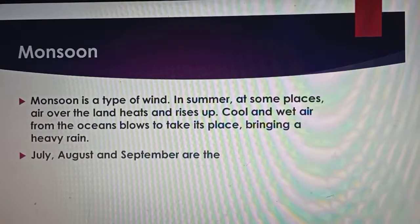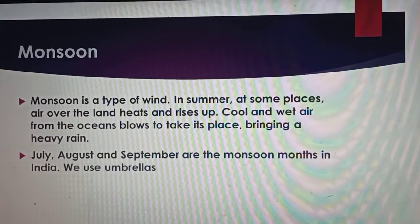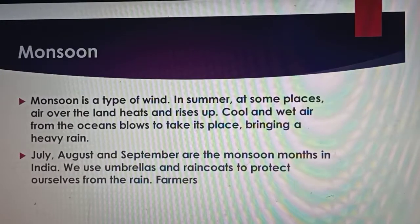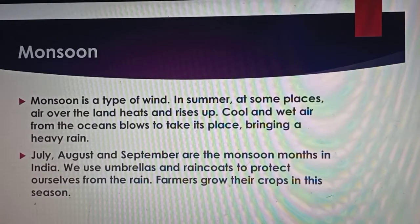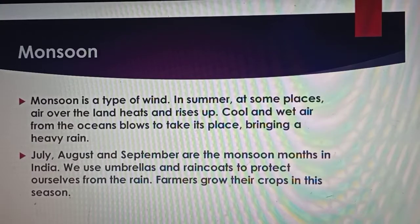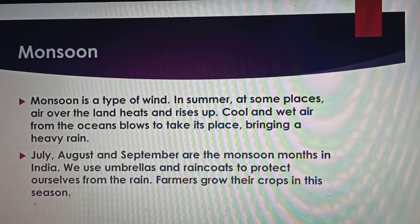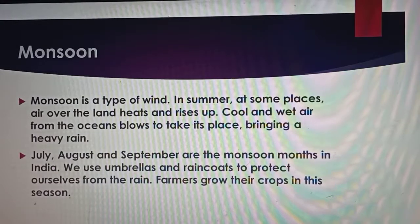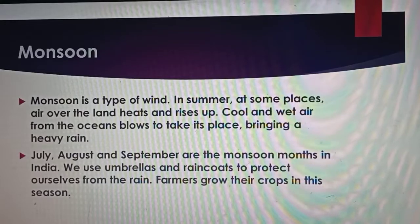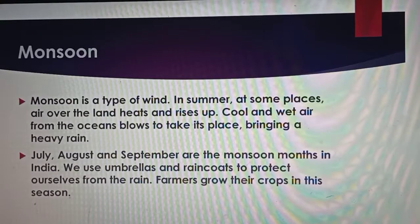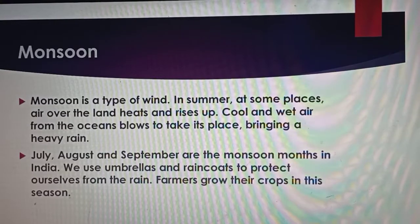July, August and September are the monsoon months in India. We use umbrellas and raincoats to protect ourselves from the rain. Farmers grow their crops in this season — monsoon season farmers के लिए बहुत अच्छा होता है.